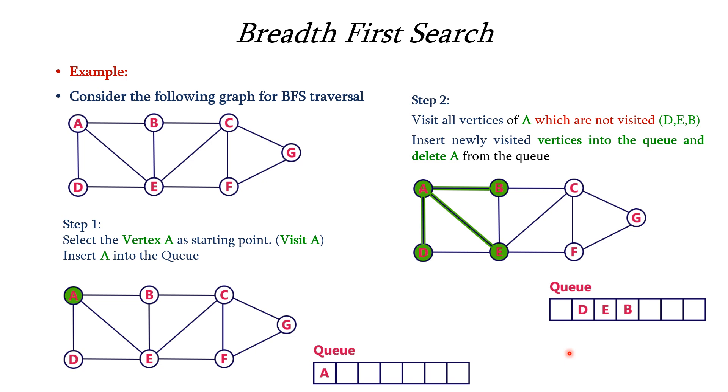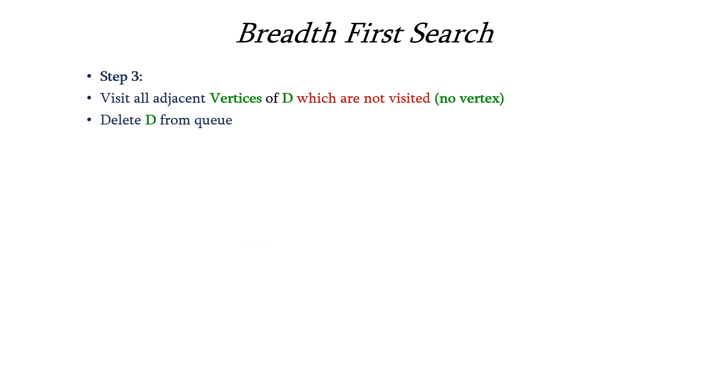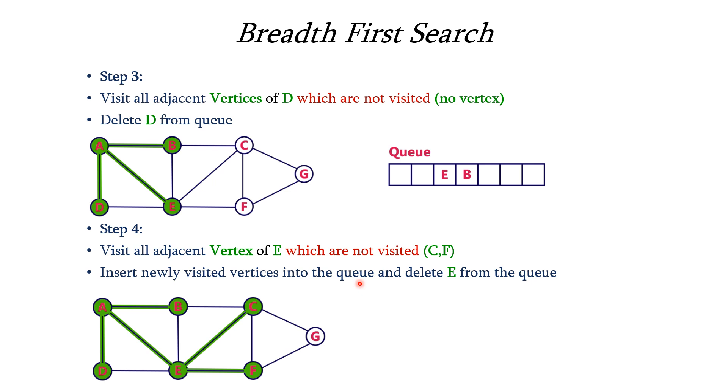Next we have D in front of the queue so consider the non-visited vertices of D but all the nodes of D which is adjacent to it, that is A and E, are already been visited so we have to just remove the node D from the front of the queue. So now the front of the queue contains E. So E is having three adjacent vertices B, C and F. B is already visited, C and F are not visited so insert the newly visited vertices into the queue. So once inserting we have to remove E from the front of the queue so now we have B, C and F.